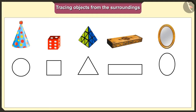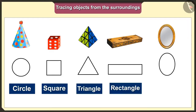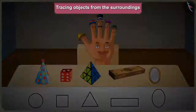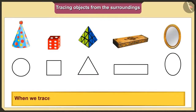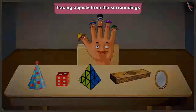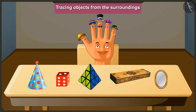So, today we traced the objects in our surroundings and got the shapes: circle, square, triangle, rectangle, and oval. Friends, remember that when we trace any object, we will get the shape according to its base. We will meet again in the next video. Bye.